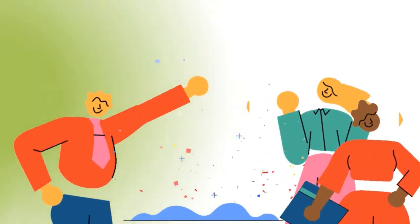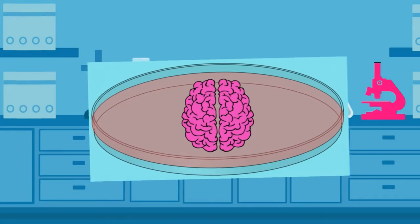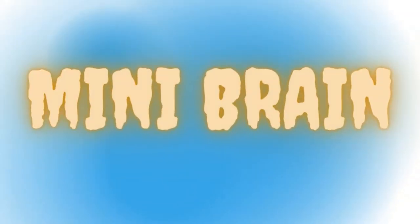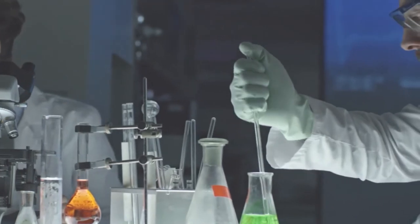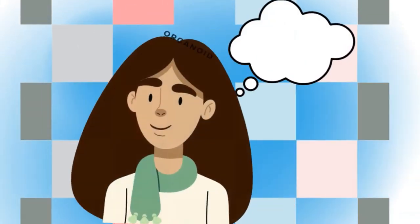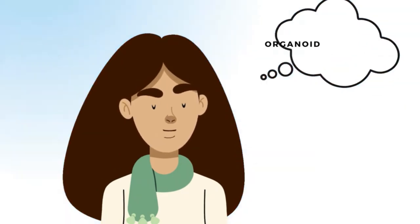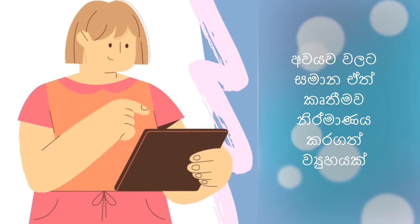This is the brain organoid. You can see the brain organoids in your brain. This is a very important part of the brain organoids. The first thing about the brain organoids is that they can be used in the brain.